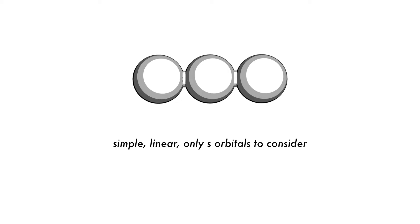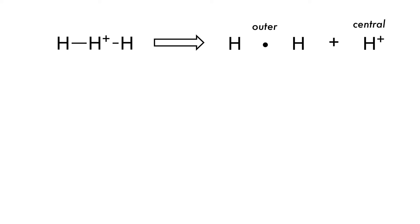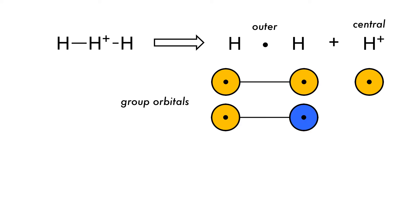For simple linear molecules, the full procedure is often not necessary and the problem can be solved by inspection. For linear H3+, the simplest triatomic, there are only s orbitals to combine. The molecule is split into two components: the central H+ and the outer group atoms. The atomic orbitals for the group of outer atoms form the group orbitals. There are only two possible combinations, either in-phase or out-of-phase. For the central atom the choice is arbitrary. The group orbitals are too far apart from each other to interact with each other.